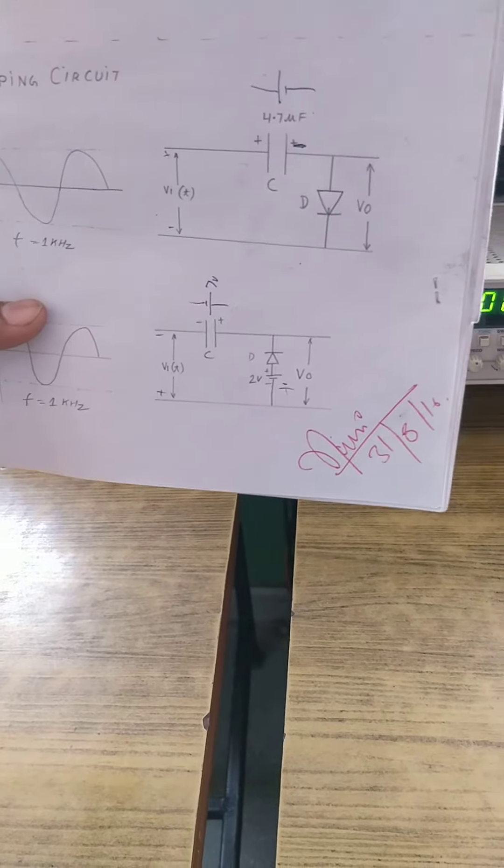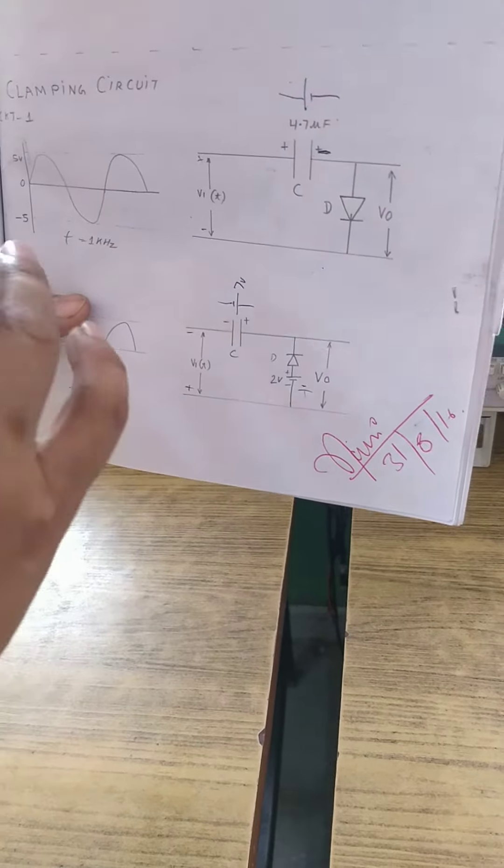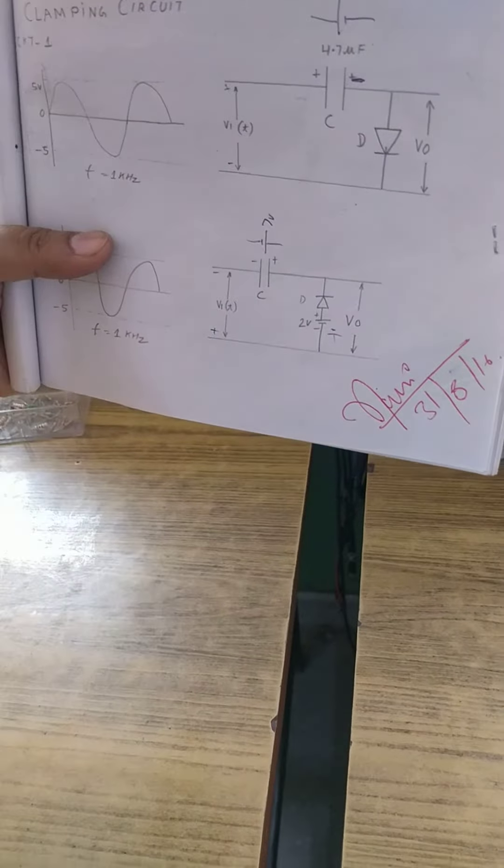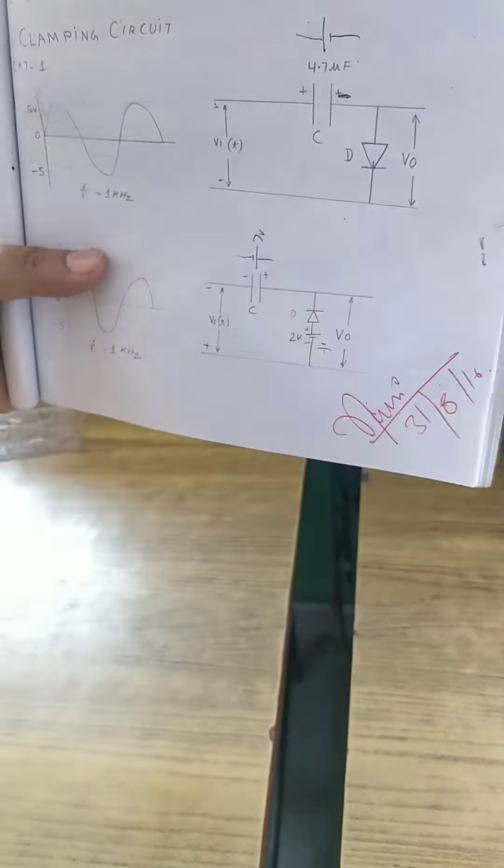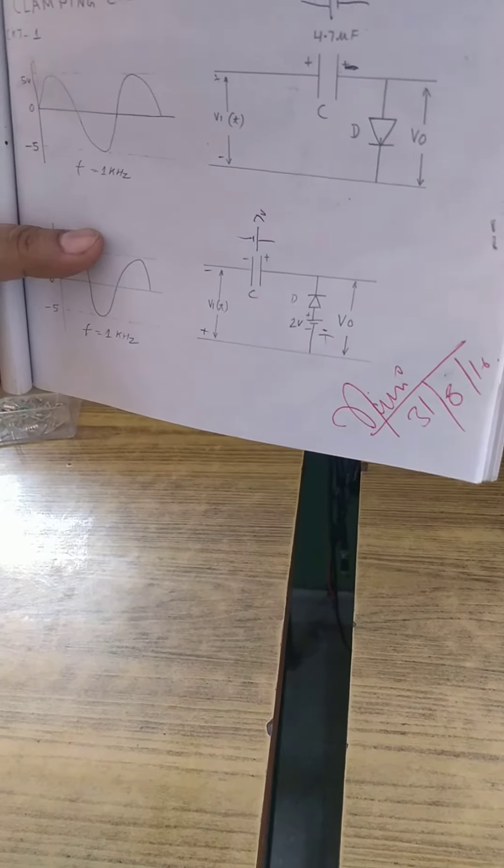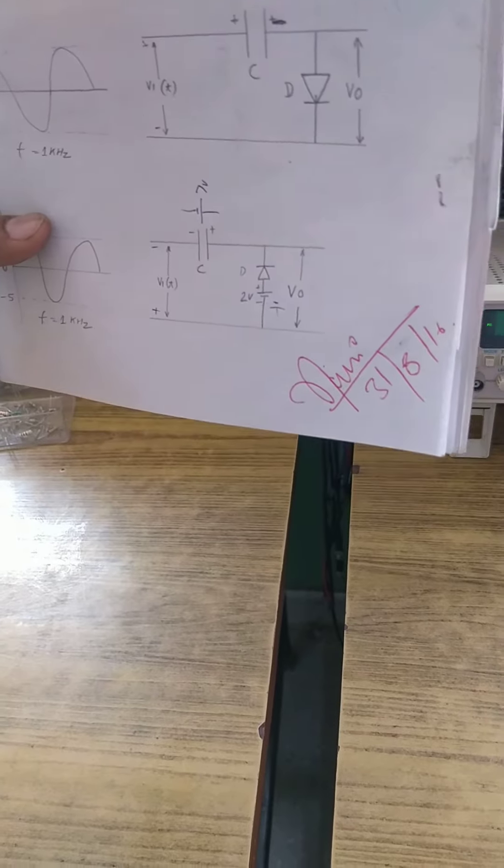The clamper is actually shifting the whole input waveform to a certain level. It depends upon the value of capacitor and its location and the location of diode as well as its polarity. How you want to shift the waveform, but there is no change in wave shape. Wave shape remains same.